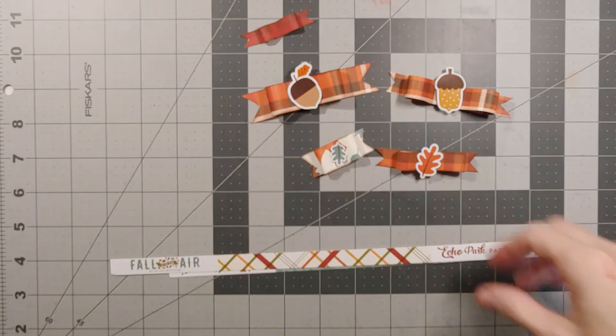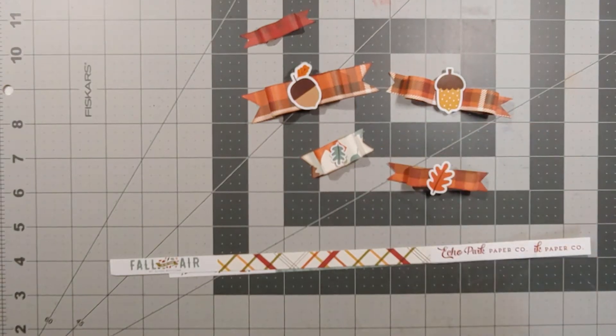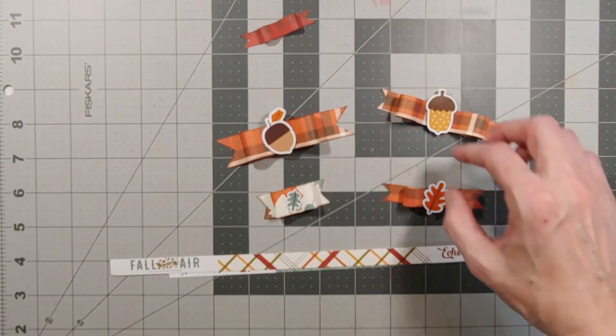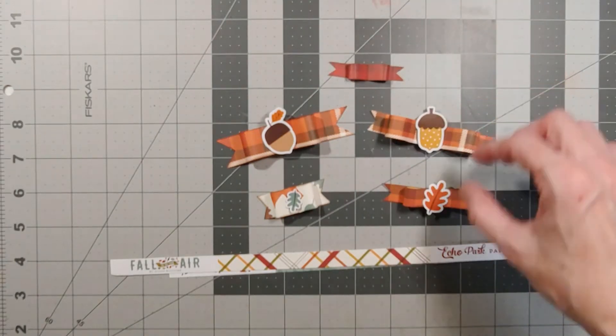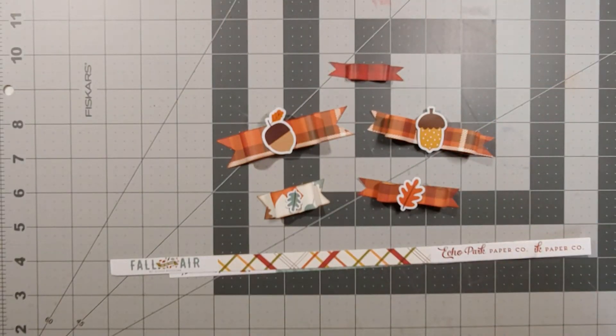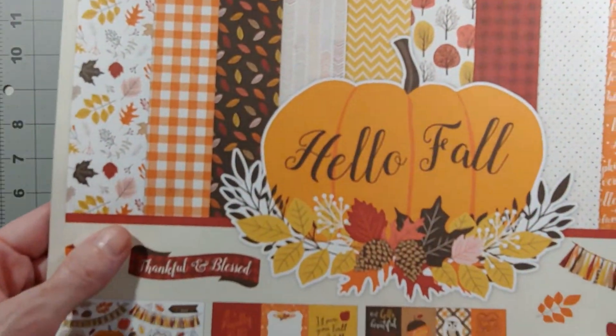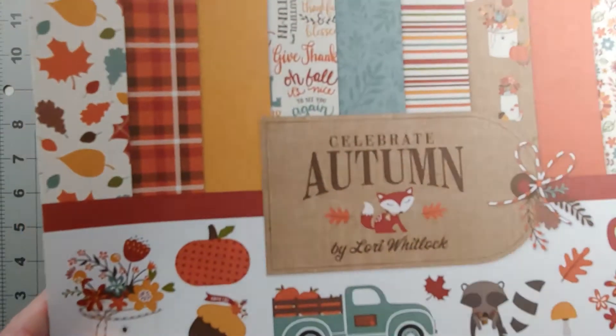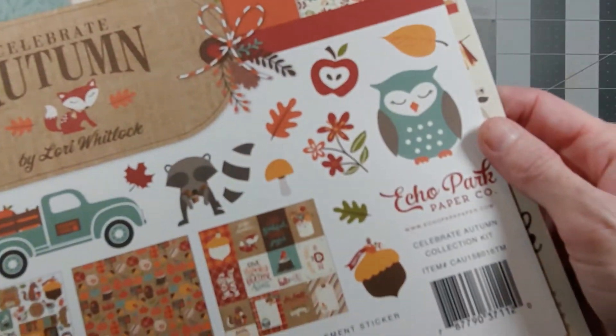Hey, it's Tanya again from scrappychicks.com and today I'm bringing you a project share and tutorial. What I've done is made paper bows using the Echo Park kits. I used two different kits: the Hello Fall kit from Echo Park and the Celebrate Autumn kit from Echo Park.